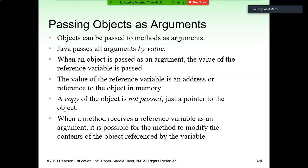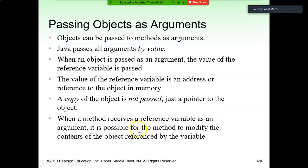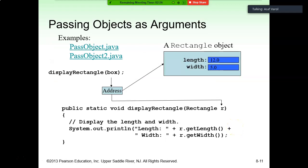Now, passing objects as arguments. Objects can be passed to methods as arguments. This is very important: Java passes all arguments by value. It means if we assign a value to a variable, this value is transferred by the arguments. When an object is passed as an argument, the value of the reference variable is passed. The value of a reference variable is an address or reference to the object in memory. A copy of the object is not passed — just a pointer to the object. When a method receives a reference variable as an argument, it is possible for the method to modify the content of the object referenced by that variable.